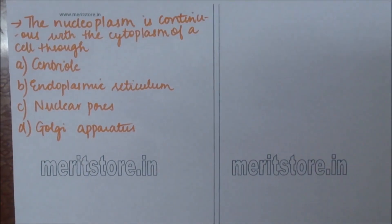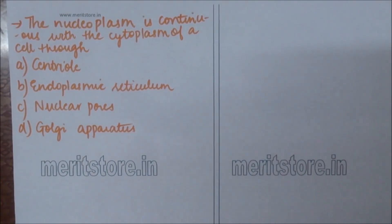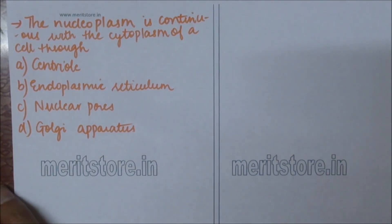The nucleoplasm is continuous with the cytoplasm of a cell through: A) centriole, B) endoplasmic reticulum, C) nuclear pore, D) Golgi apparatus.